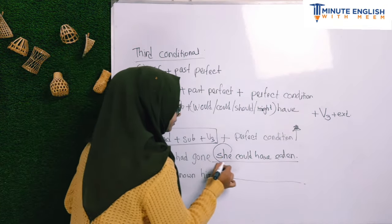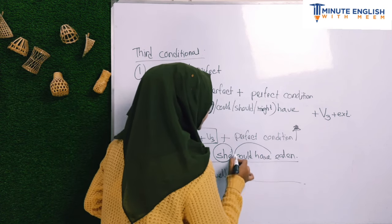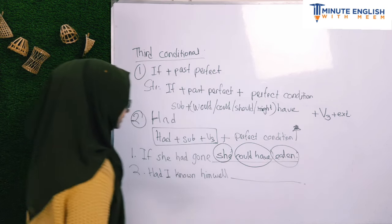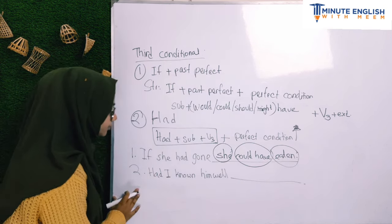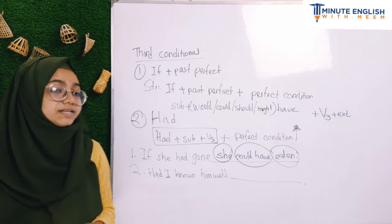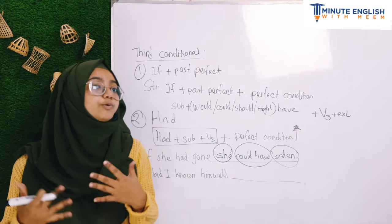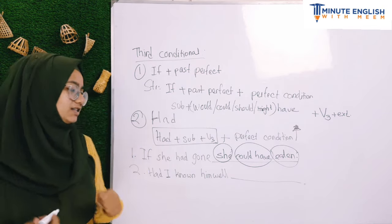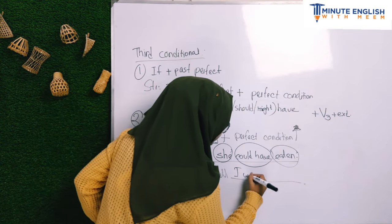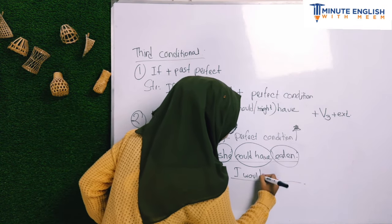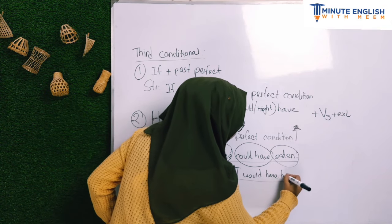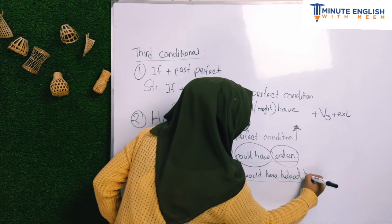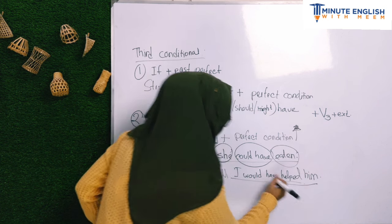The third conditional formula: Subject + would/could/should/might + have + V3. That's it. For example: 'I would have helped him.' That's the third conditional.